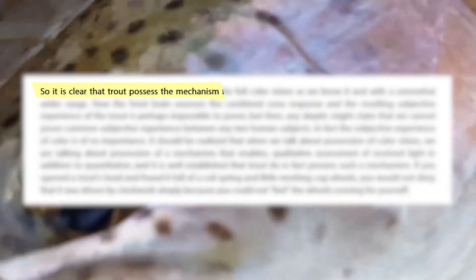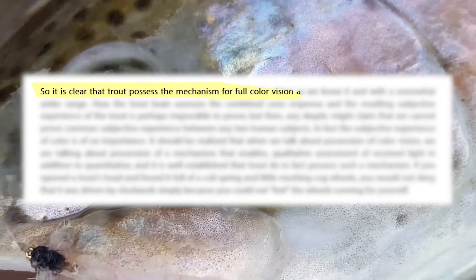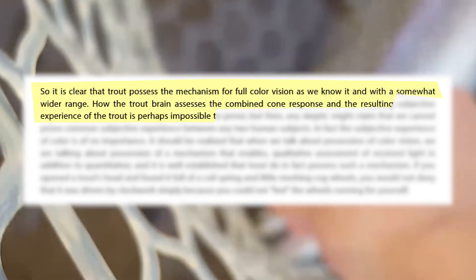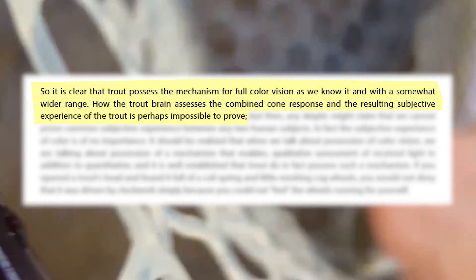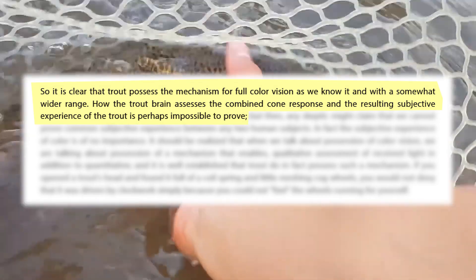He finishes this discussion by stating, it is clear that a trout possesses the mechanism for full color vision as we know it, and with a somewhat wider range. But how the trout brain assesses the combined cone response and resulting subjective experience is perhaps impossible to prove.